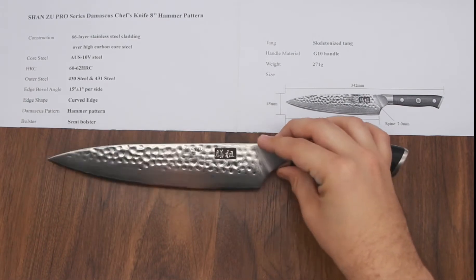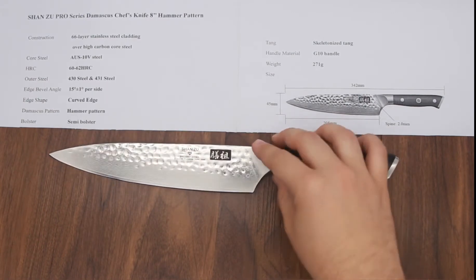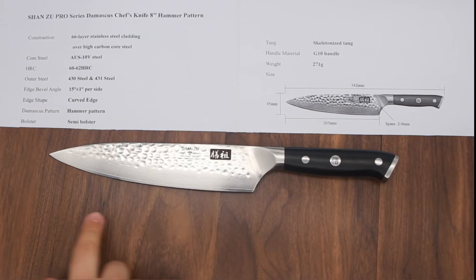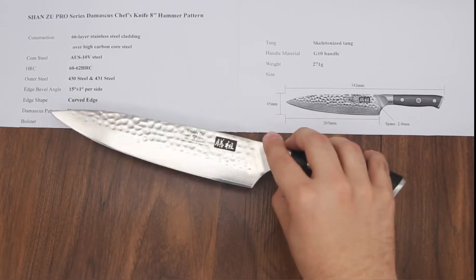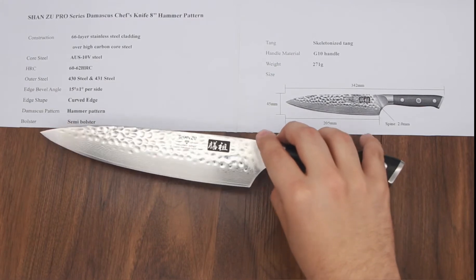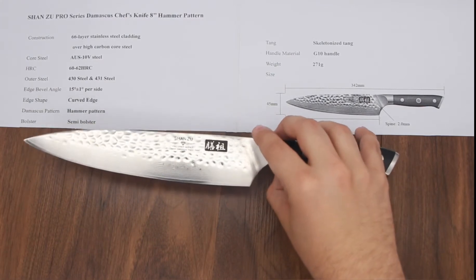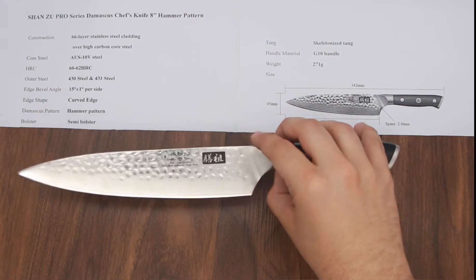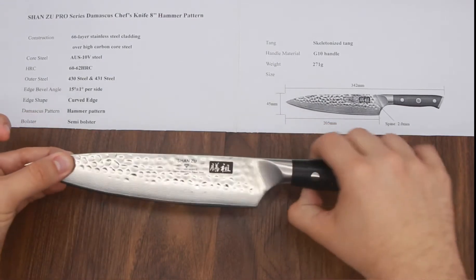The edge itself has been polished and beveled to 15 degrees on each side. So that's a total of around 30 degrees. This means that it can cut through your food super easily and precisely.